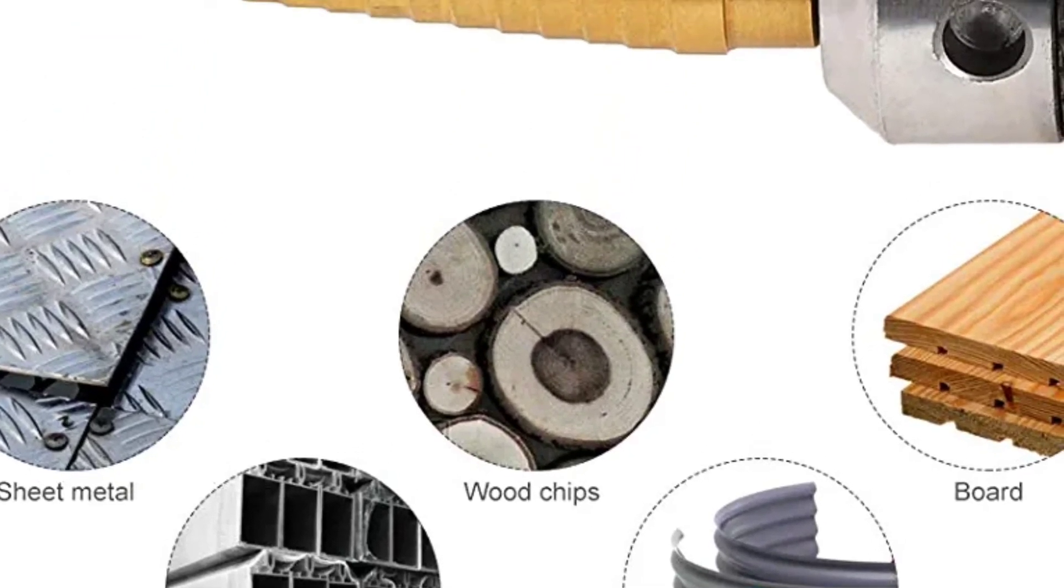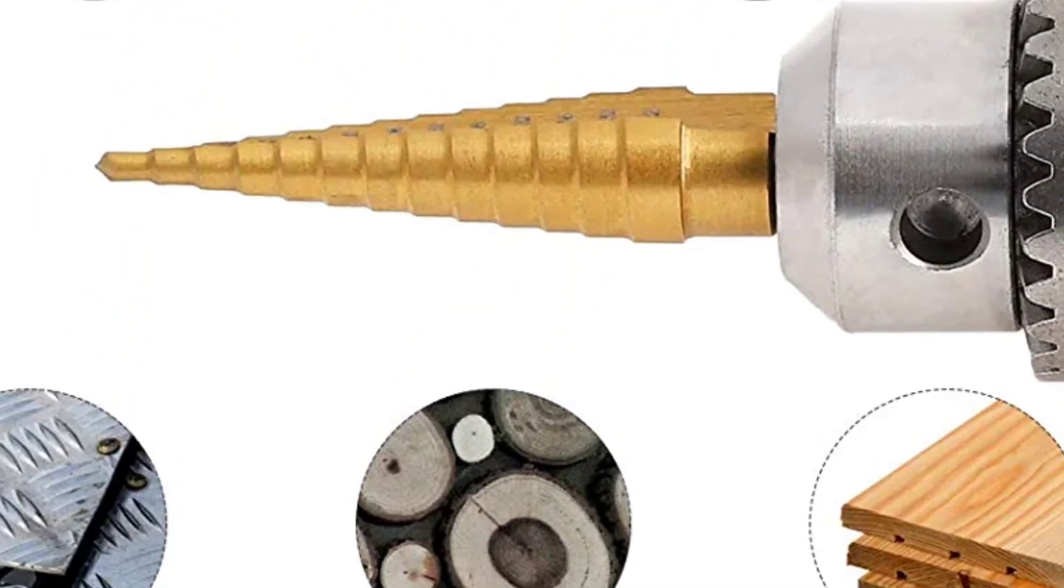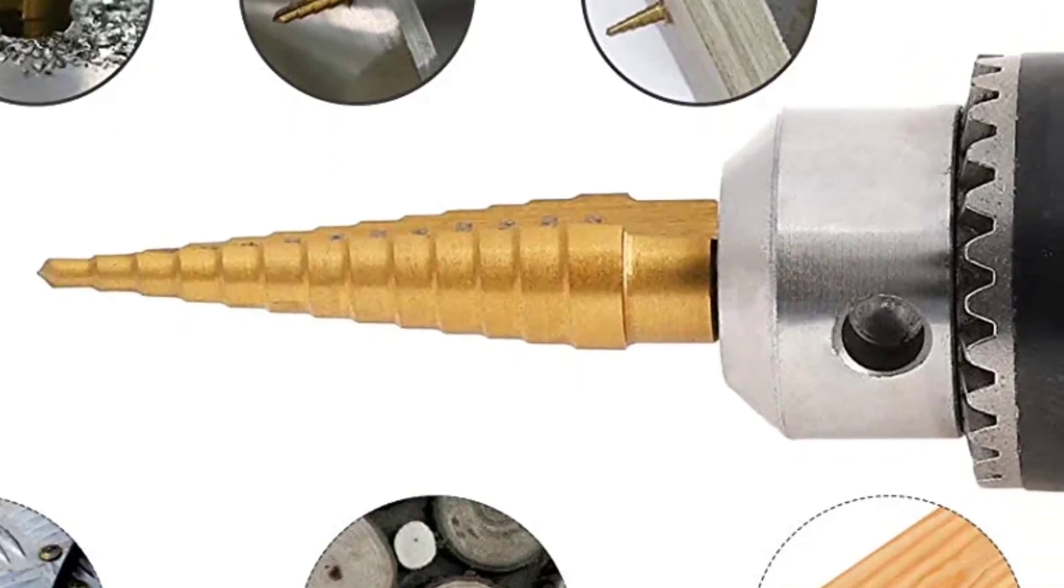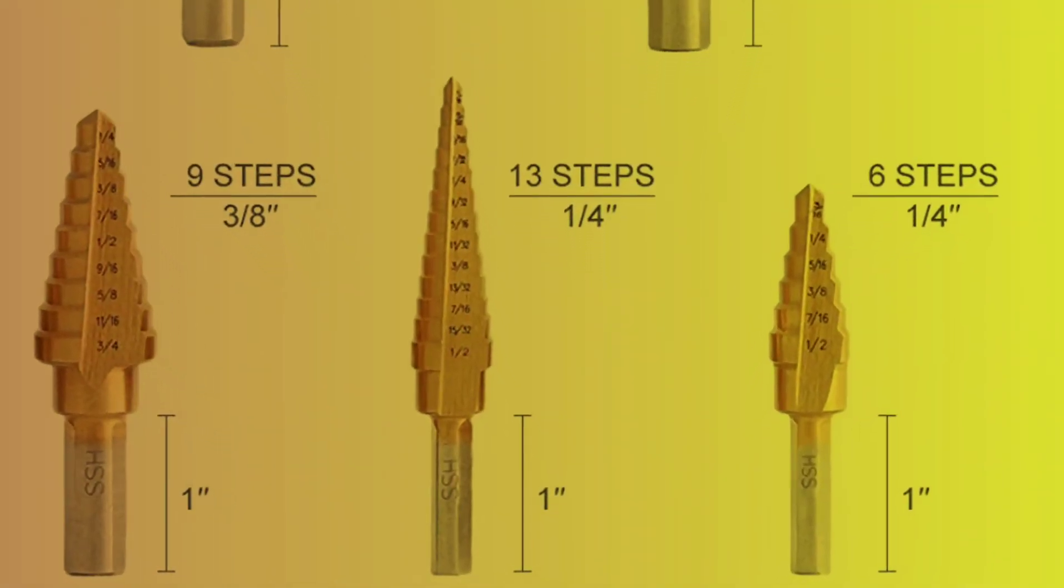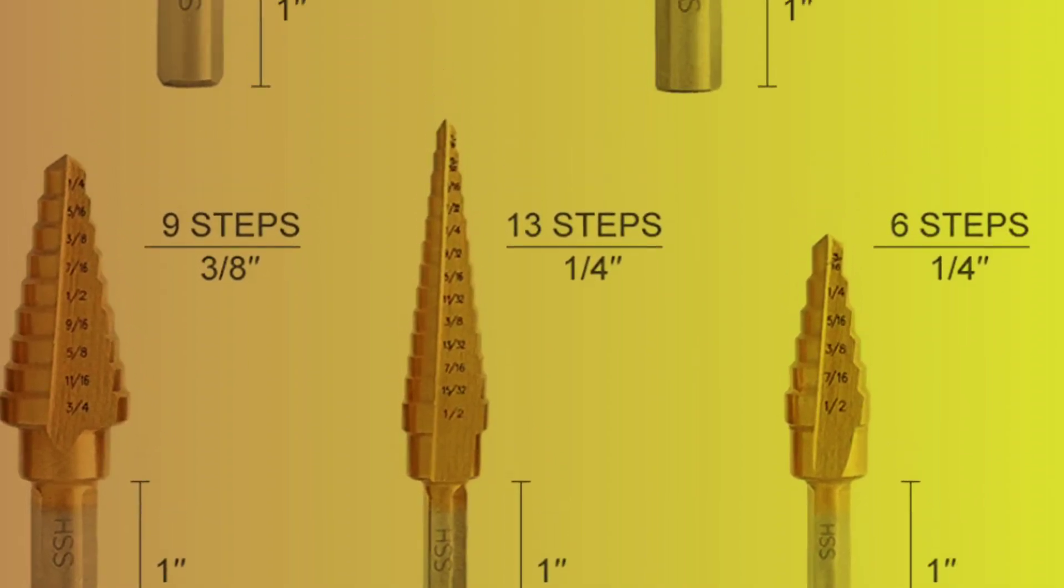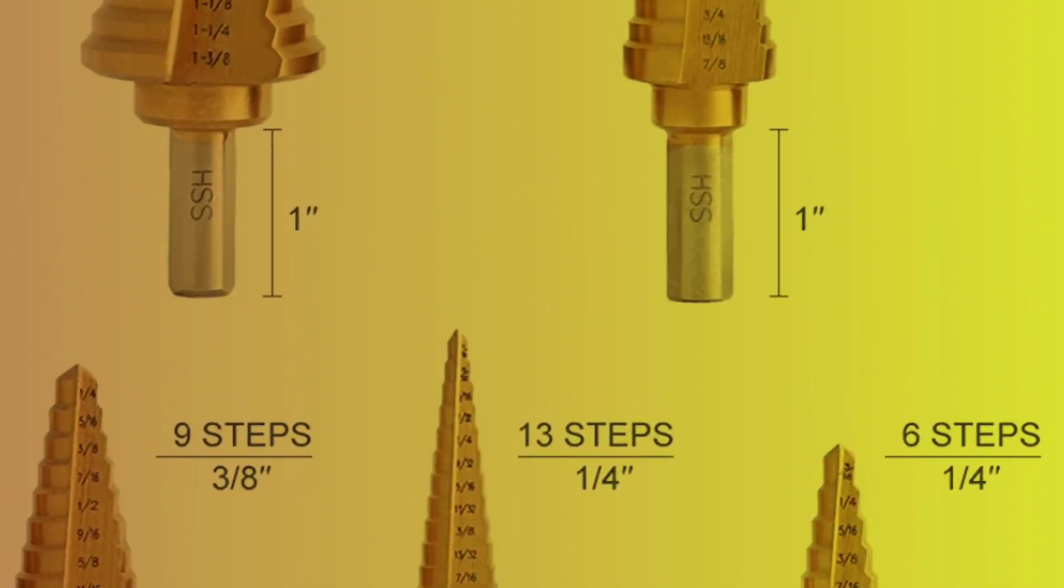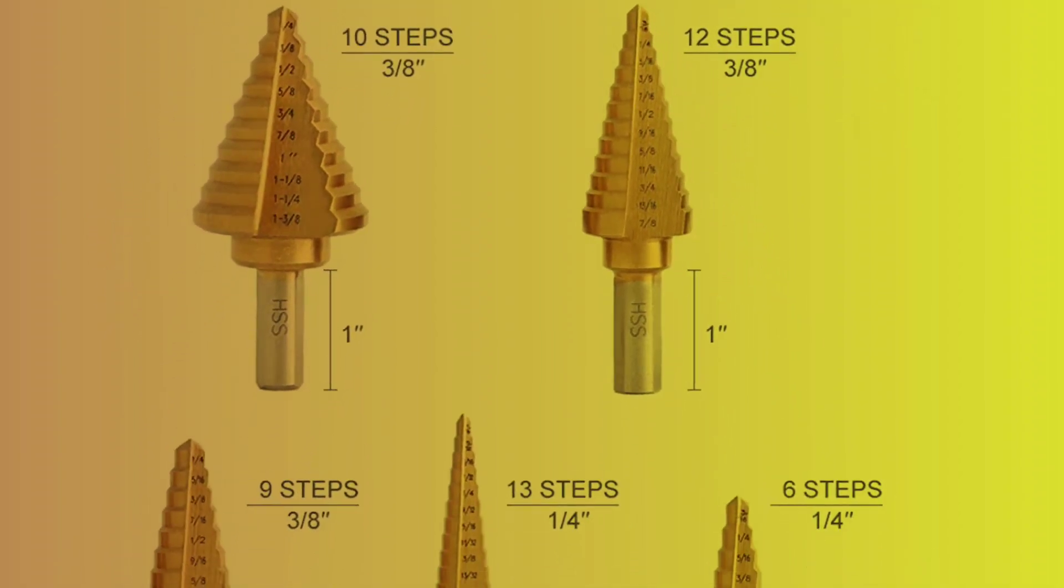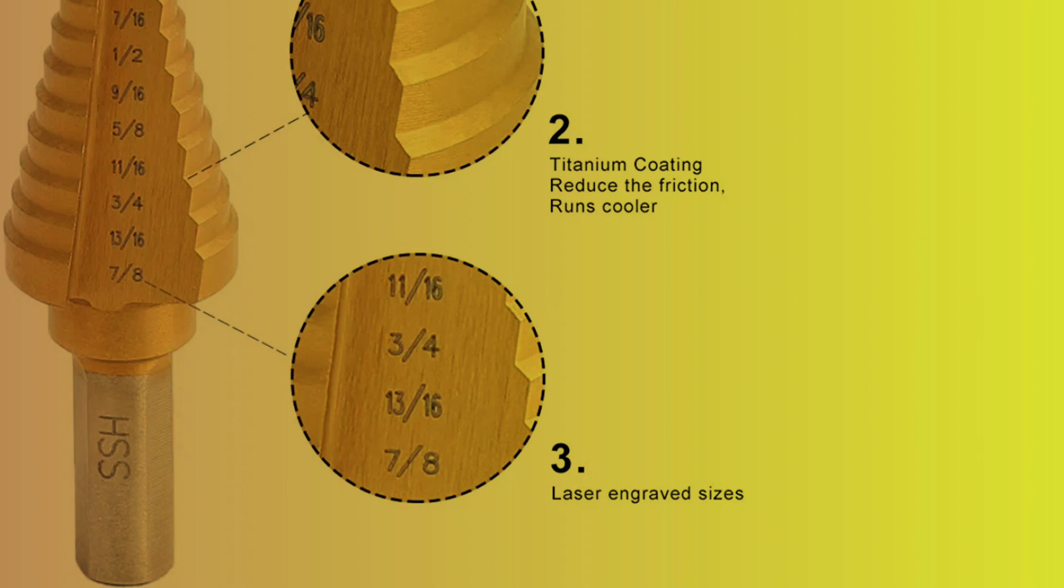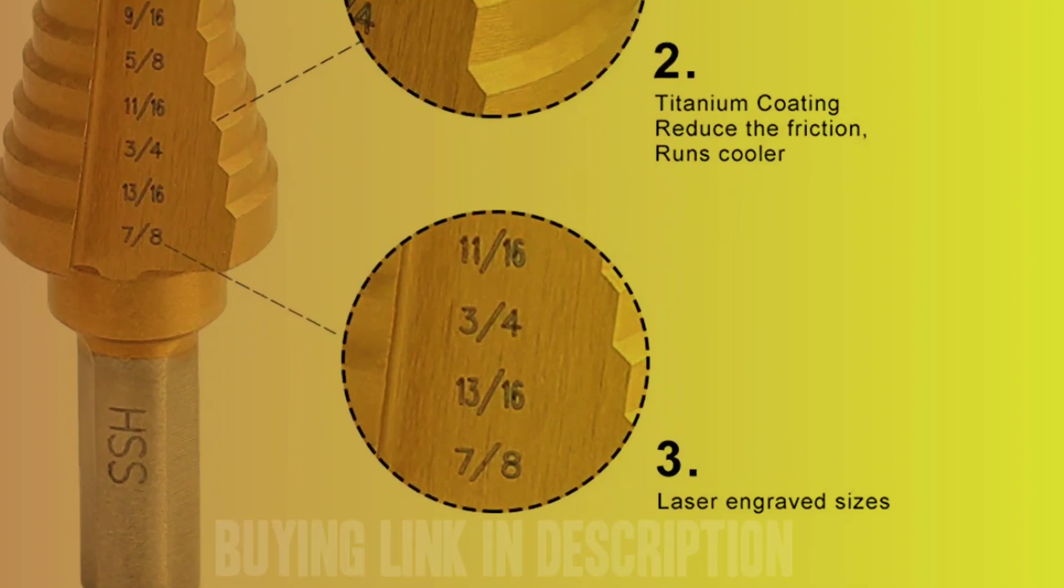The short length of the bits makes them easy to handle and control, which is especially helpful for tasks that require a steady hand. The set comes with a total of 50 sizes, which gives you a wide range of options for different drilling tasks. The included aluminum case makes it easy to store and transport the bits, and the case is also helpful for keeping the bits organized and easily accessible.